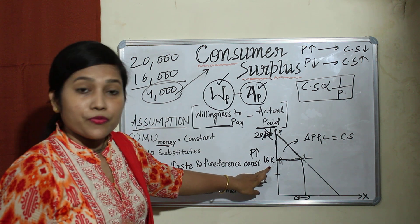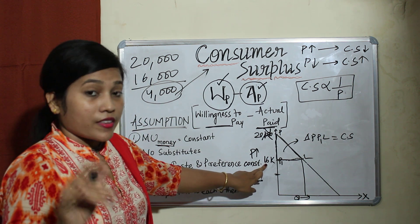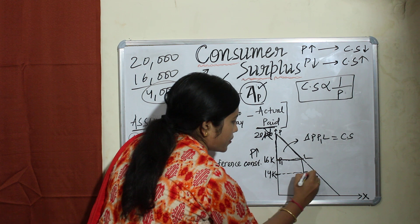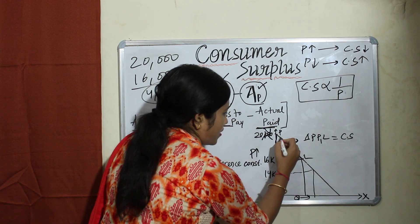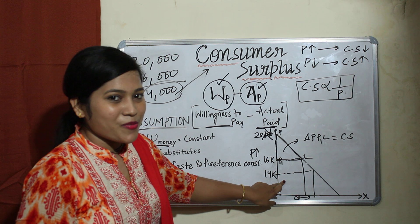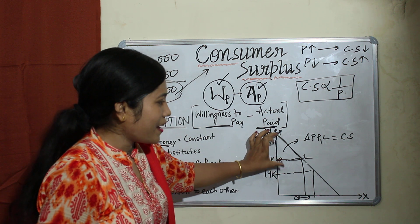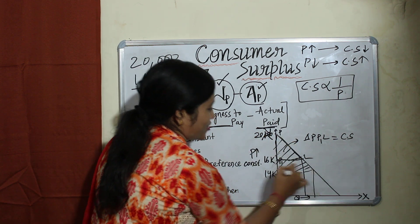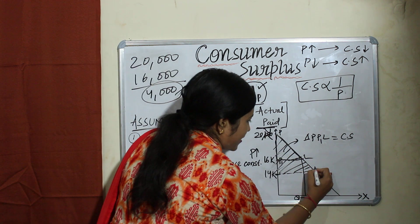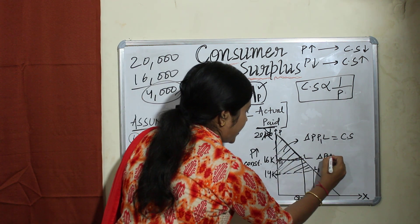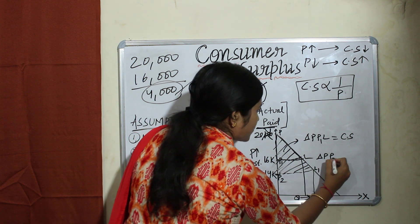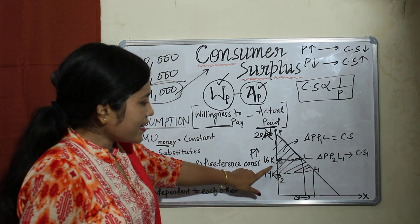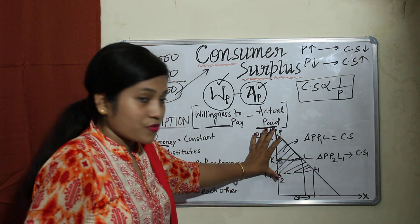Suppose the price has been decreased to 14,000 rupees — initially it was 16,000, now we make it 14,000. At 14,000 we will purchase here. What happens to consumer surplus? Instead of the original triangle, we now take a bigger triangle. If we call that point L1, triangle P, P2, and L1 is your new consumer surplus. That means when price decreases, consumer surplus has increased.